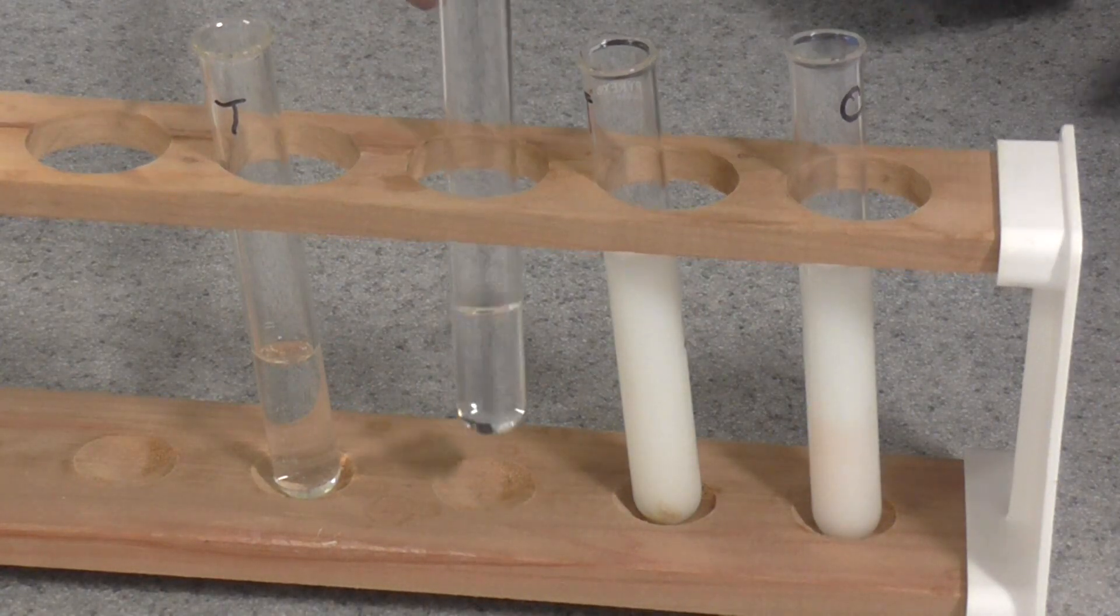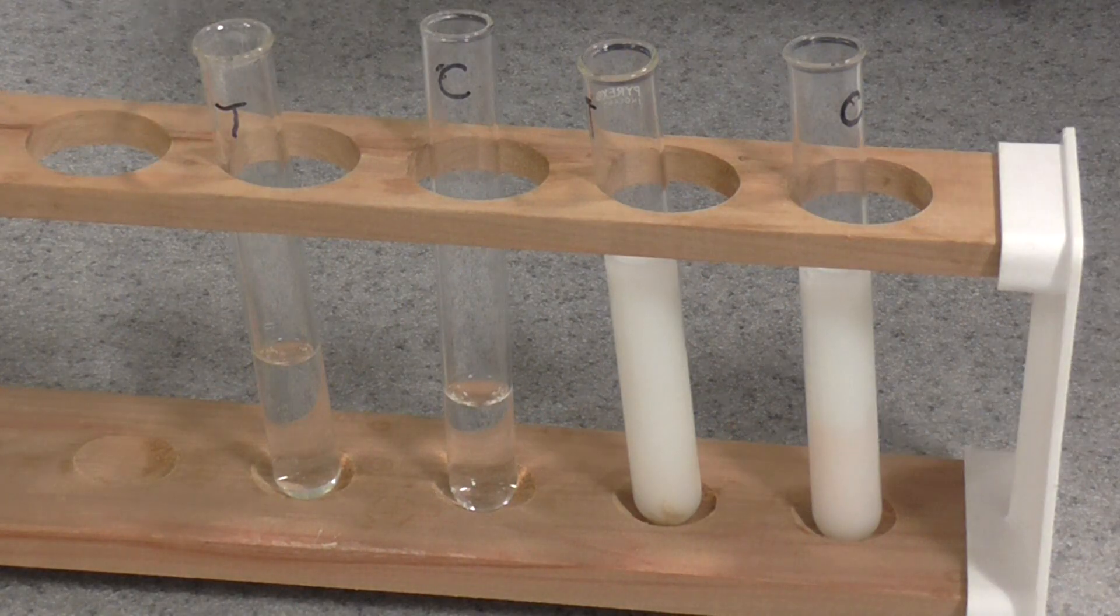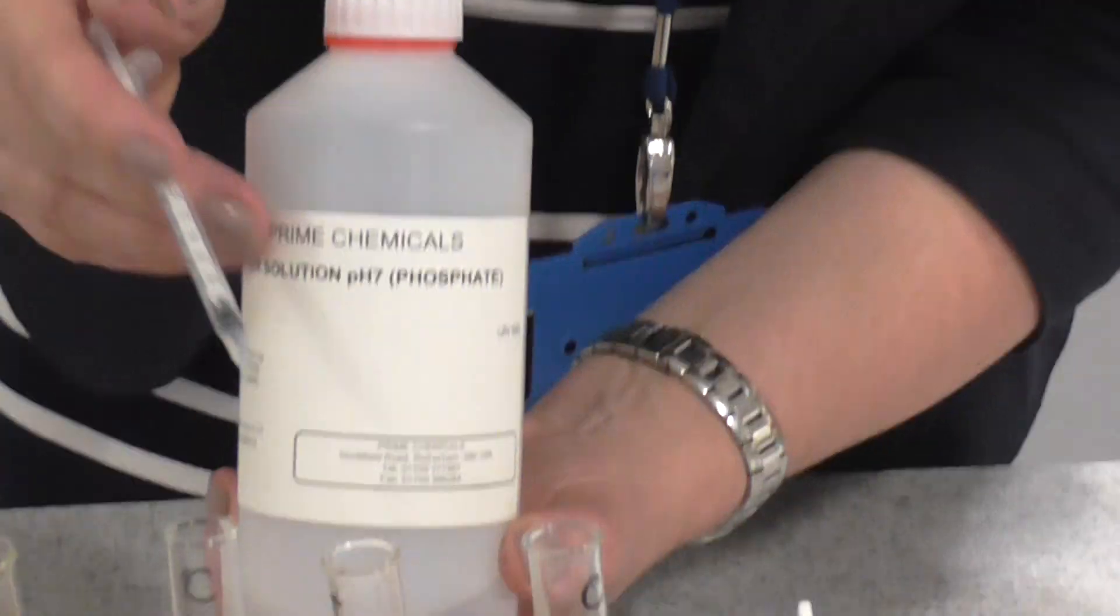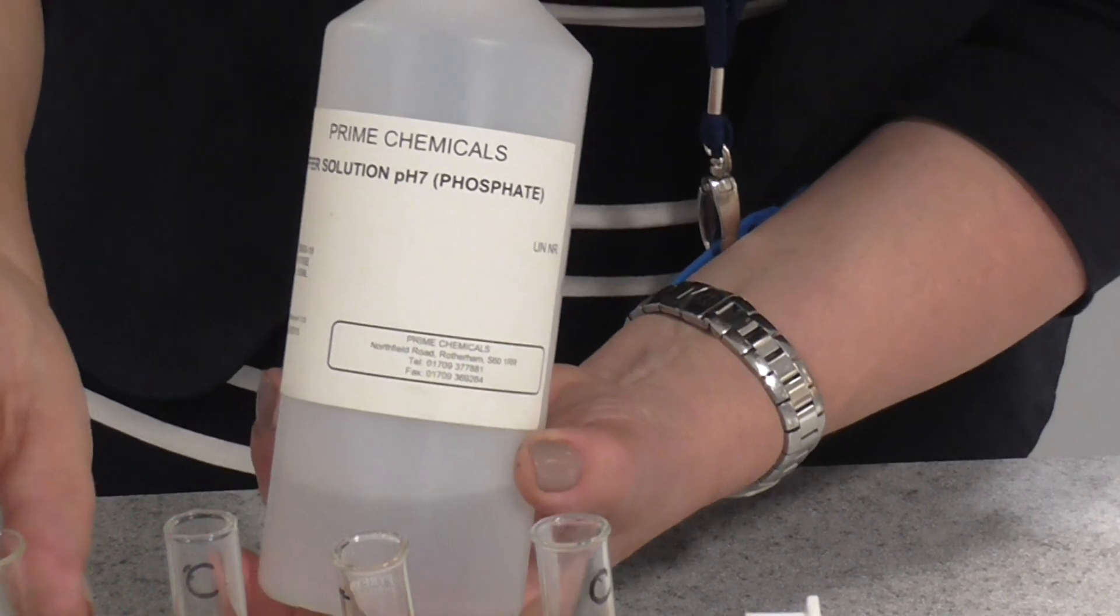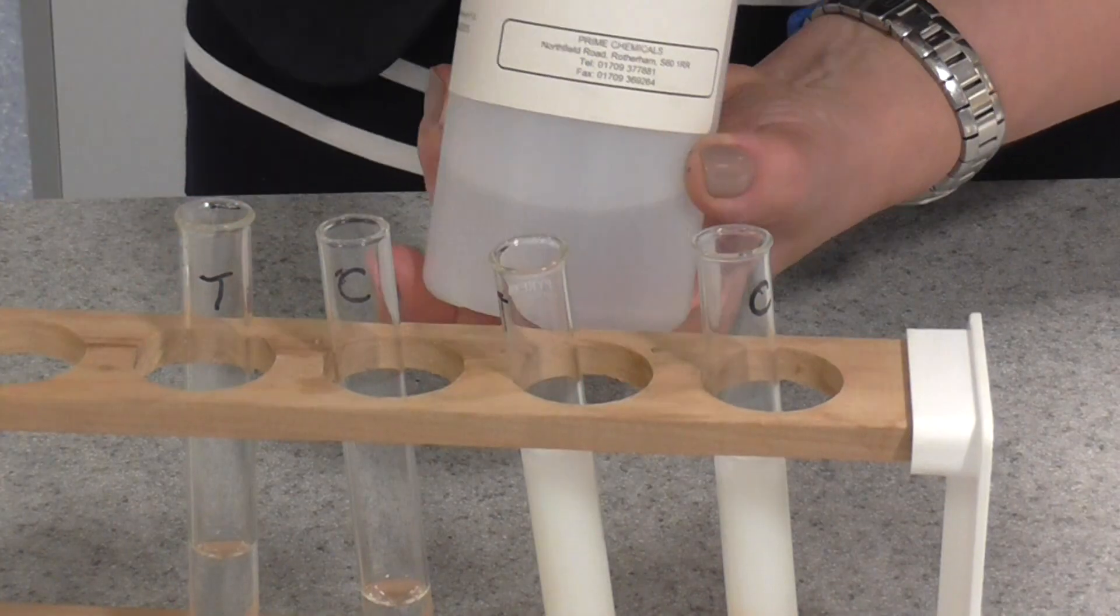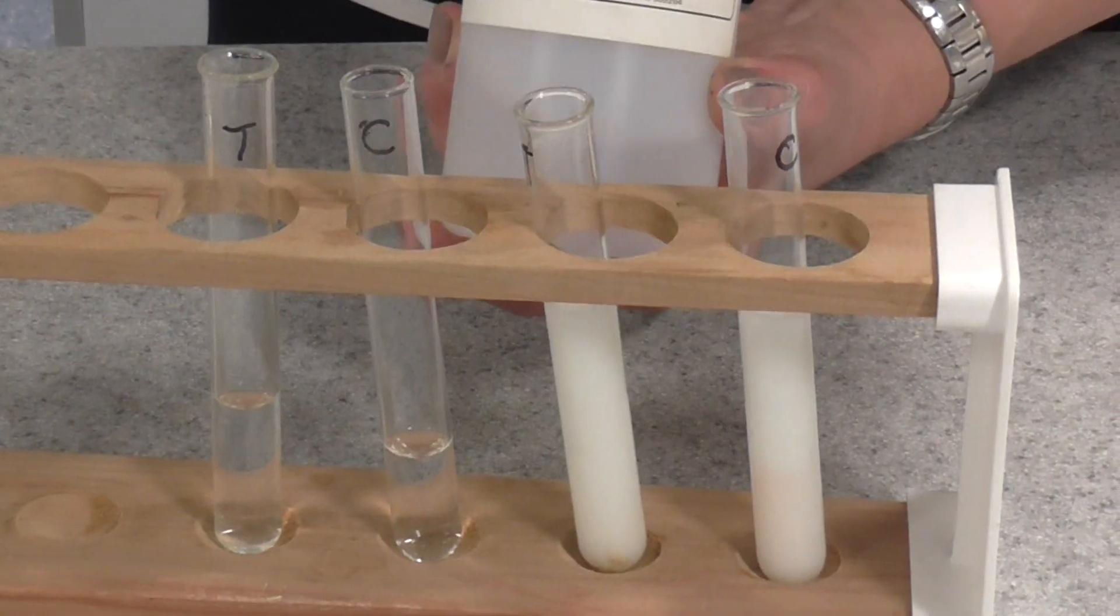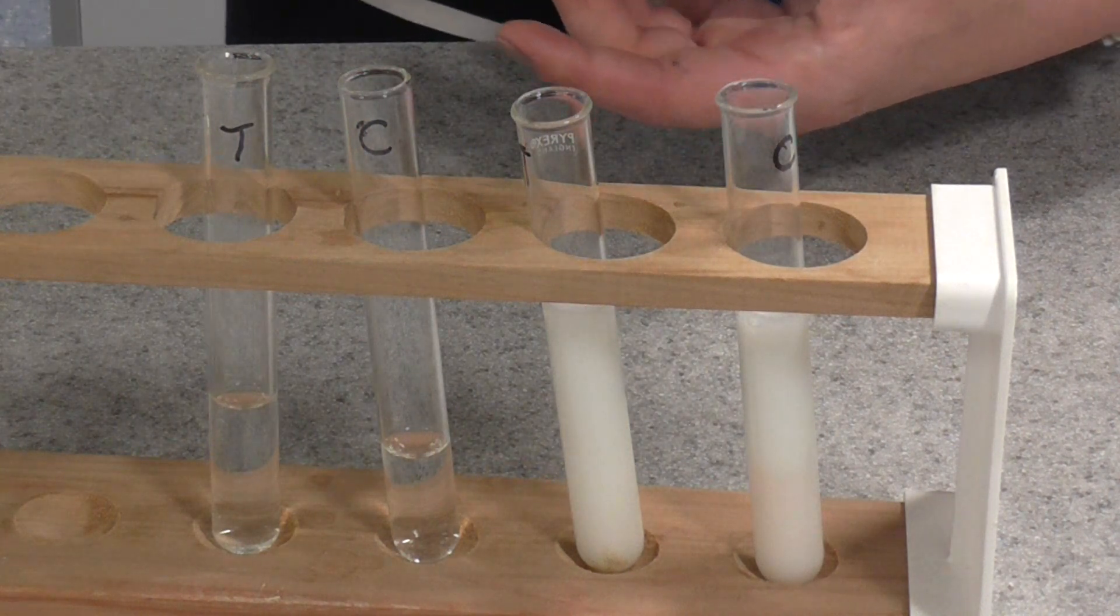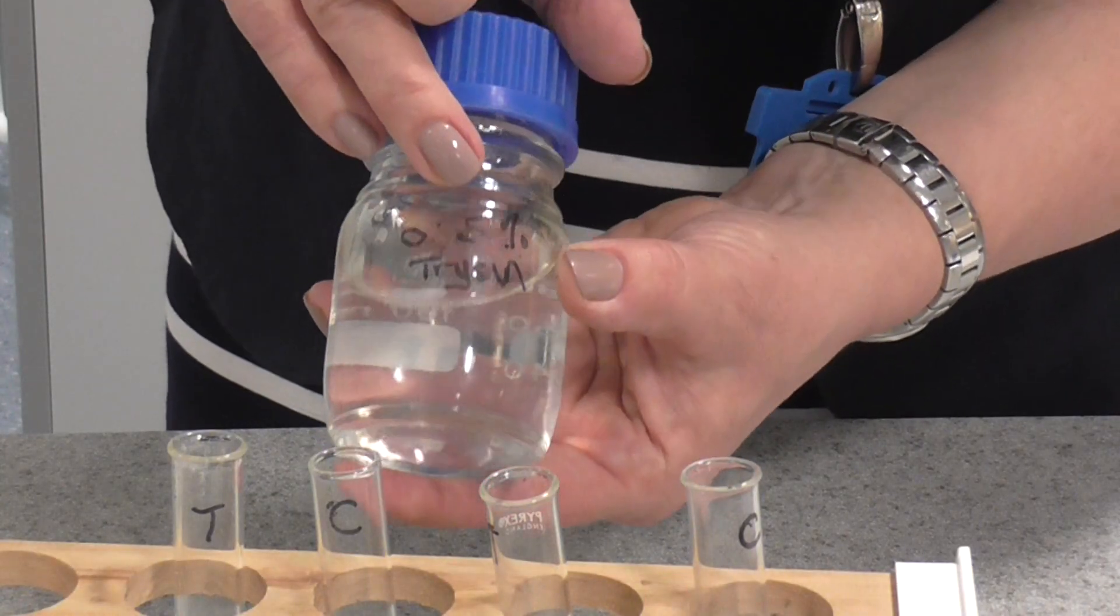In this tube here, this is for the control, I've got 4 centimetres cubed of pH 7 buffer. I've used a smaller syringe there, and I've just got 4 centimetres cubed of pH 7 buffer. In the tube labelled T here, I've got 2 centimetres cubed of pH 7 buffer, and I've also added to it 2 centimetres cubed of 0.5% trypsin solution.